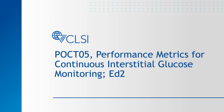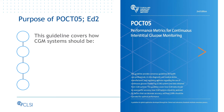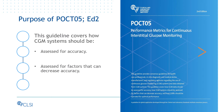POCT-05 Performance Metrics for Continuous Interstitial Glucose Monitoring, Second Edition. The new edition 2 of the POCT-05 guideline covers how continuous interstitial glucose monitoring systems, abbreviated as CGM, should be assessed for accuracy, how CGM systems should be assessed for factors that can decrease accuracy, and how CGMs should be operated for optimal performance.